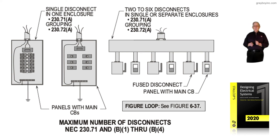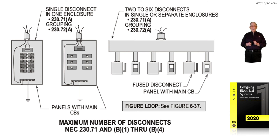Keep that in mind as we go through the rest of this chapter 6 presentation. Our next illustration that we will review is 6-37, where we have two to six mains as shown, and how they could be arranged by the amount of power needed to supply the building. Figure 6-36 is illustrating there has to be a main ahead of the individual panels in panel 1 and 2, but the installation to the right is permissible by 230.71, B1 through B4.